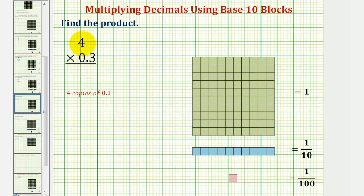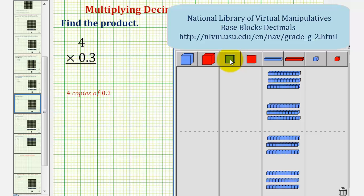To find our product, we want four copies, or four sets, of three longs. And again, because each long is one tenth, here's one copy of three tenths, a second copy of three tenths, a third copy of three tenths, and a fourth copy of three tenths.